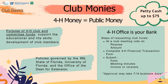Once you have an active 4-H club, you may have fundraisers or donations that turn into club money. Remember, 4-H money equals public money. All 4-H club money and committee funds are to support the educational and life skills development of club members. All 4-H financial policies are governed by the IRS, State of Florida, University of Florida, and the Office of the Dean for Extension. Each club is allowed to have $75 in petty cash managed by the club leader. All other money should be turned into the 4-H office. To request club funds, members should vote on the purpose and amount, complete the 4-H financial transaction form, and submit it with meeting minutes and an invoice or receipts. Approval may take one to two weeks.